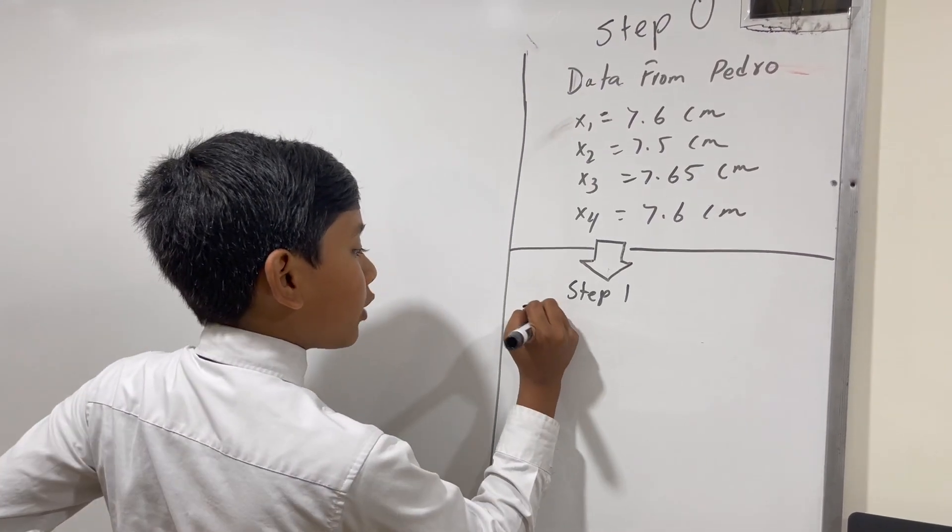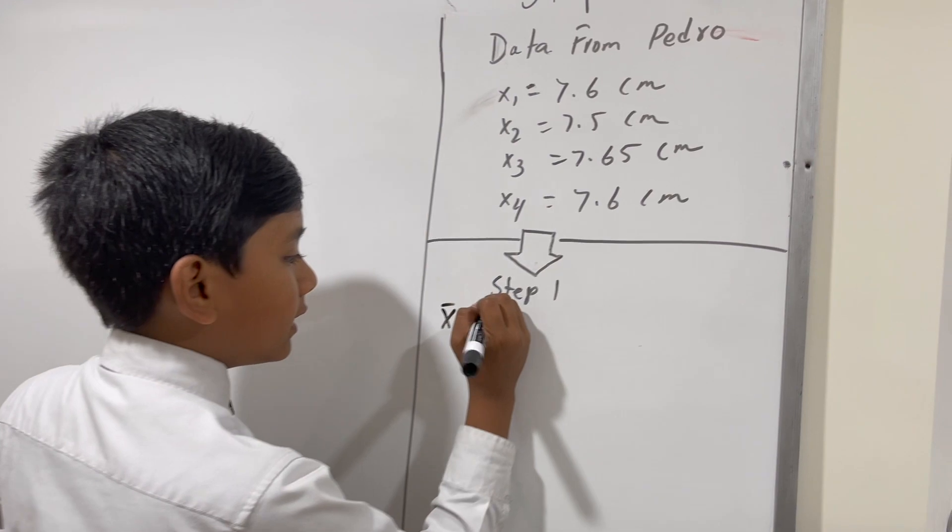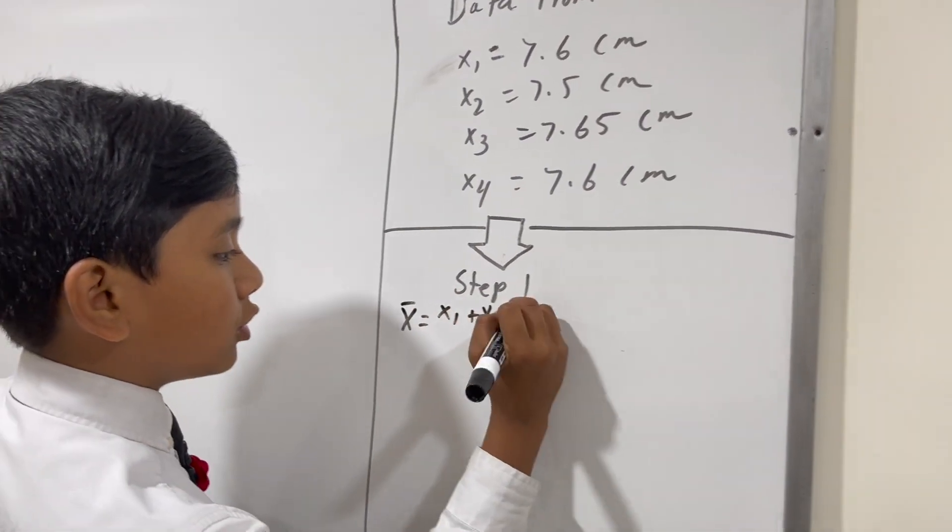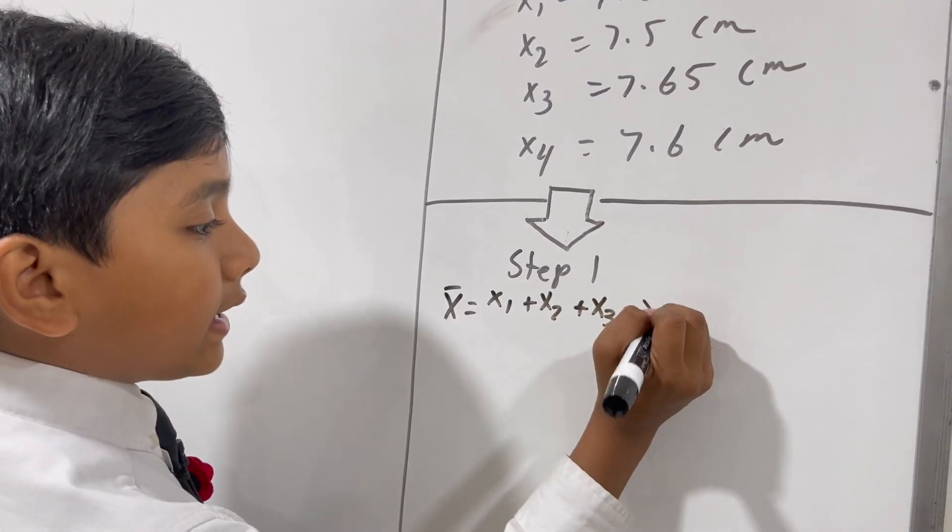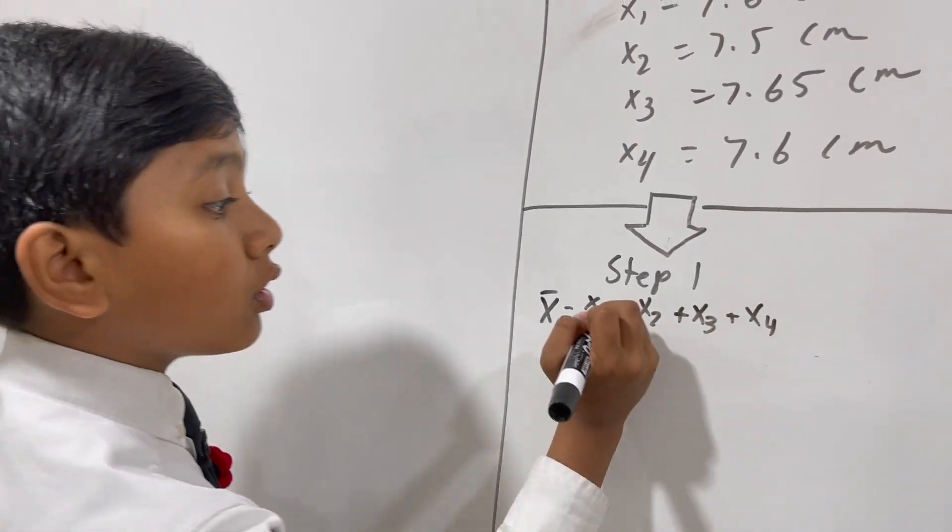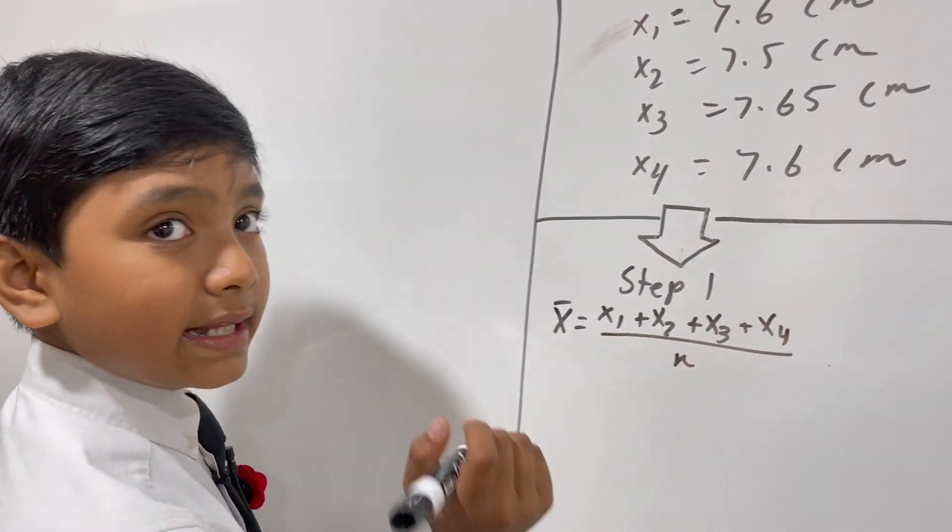So the average, of course, is going to be x1 plus x2 plus x3, and in this case it ends at x4 over n, which in this case is 4.